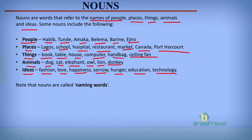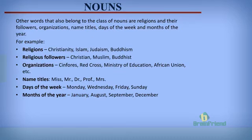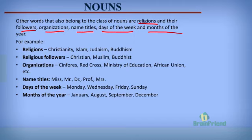Note that nouns are referred to as naming words because they name people, things, animals, places, and ideas. Now, some other words apart from names of people, places, animals, things, or ideas that can also be referred to as nouns include religions and their followers, organizations, name titles, days of the week, and months of the year.